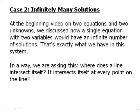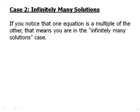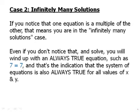In a way, we're asking, where does a line intersect itself? It's as if we pick two random lines, and by the most unlucky chance imaginable, we just happen to pick the same line twice. And so, it lands on itself and intersects itself in an infinite number of places. If you notice that one equation is a multiple of the other, that means you are in the infinitely many case. Sometimes you can just spot that. Even if you don't notice that and solve, you'll wind up with an always true equation. You wind up something where all the variables drop out, and you just get something like 7 equals 7, something that's always true. When you get something that's always true, that's an indication that the system of equations is also always true for all values of x and y. So, this is the infinitely many solutions case.